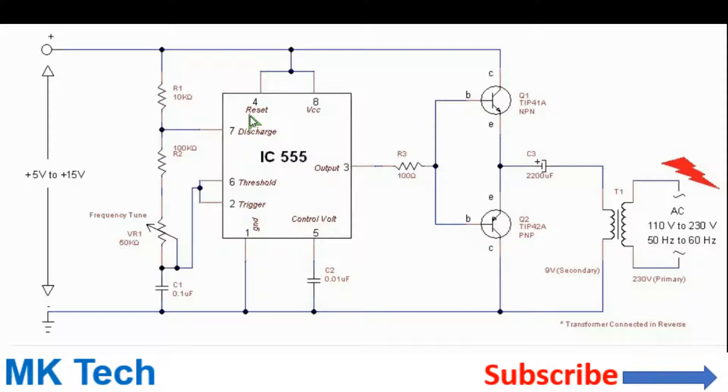The connections are shown here. Pin 4 and 8 go to VCC. Pin 7, the discharge pin, goes to the connection point as shown here. The trigger and threshold are connected together to the timing capacitor. The ground pin goes to ground, and the control pin is connected to ground via this 10 nanofarad capacitor. This ensures that the output is stable.